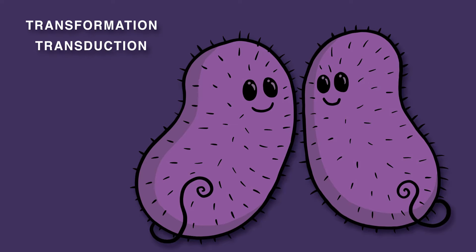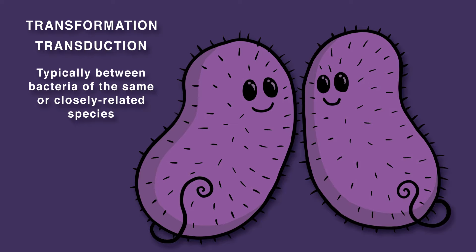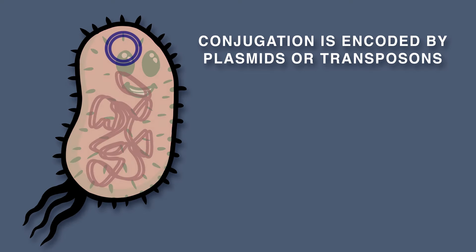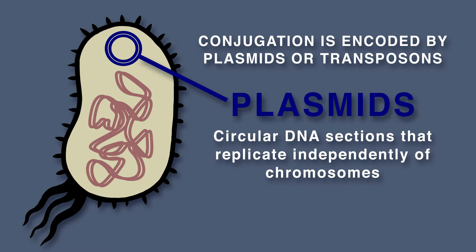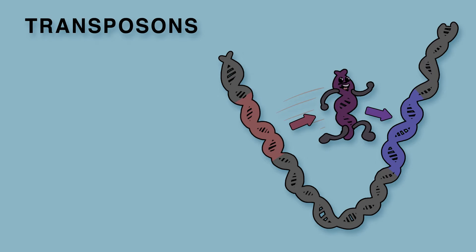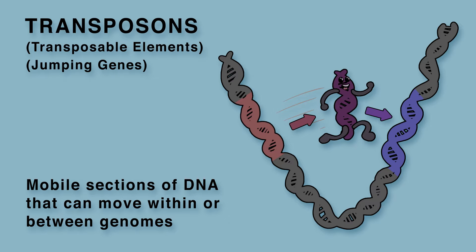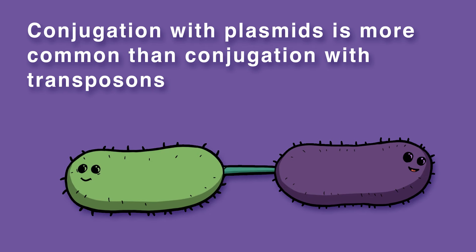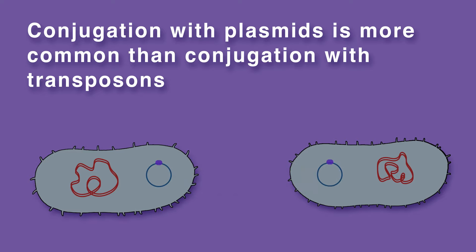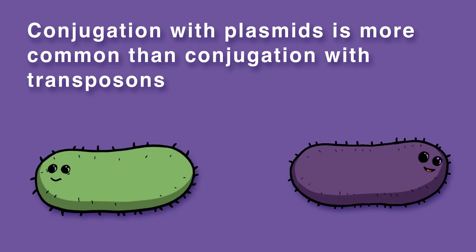Transformation and transduction typically take place between bacteria of the same, or closely related, species. Conjugation is encoded by plasmids or transposons. Plasmids are circular DNA sections that replicate independently of chromosomes. Transposons, also known as transposable elements or jumping genes, are mobile sections of DNA that can move within or between genomes. Conjugation with plasmids is more common than conjugation with transposons.